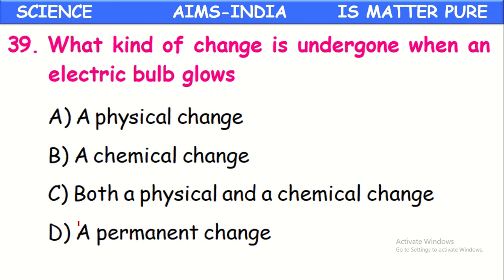What kind of change occurs when an electric bulb glows? When an electric bulb glows, it undergoes only a physical change because there is no change in the chemical composition, and it can be reversed immediately. So it is a physical change.